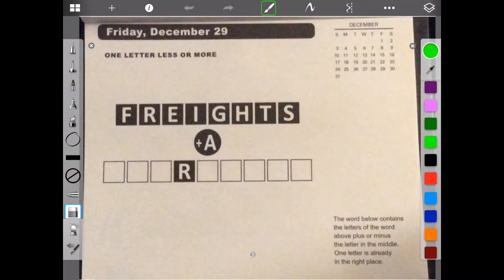Hello, welcome to the last week of Brain Games Calendar 2017. We're in week 52, day five: One Letter Less or More. Our last one. The word below contains the letters of the word above plus or minus the letter in the middle. One letter is already in the right place. Okay, so we're adding the A. We already have an R they've already put in for us. So let's erase that or block it so that we don't count it.